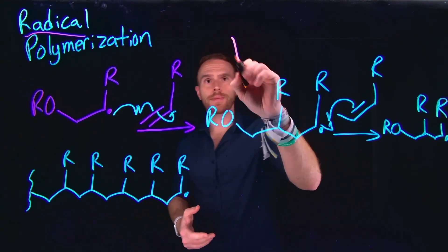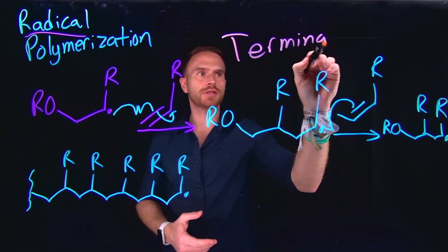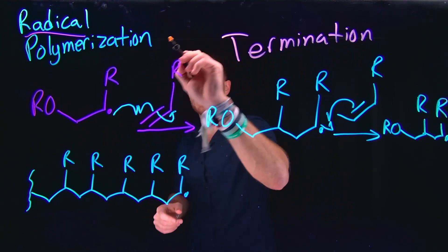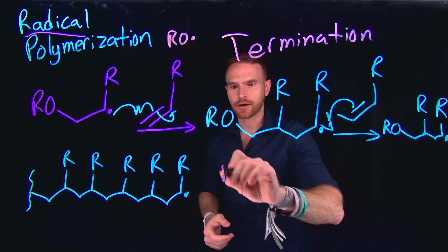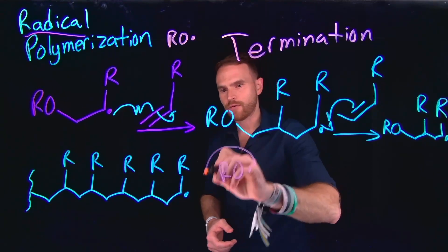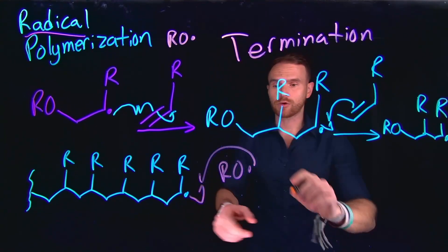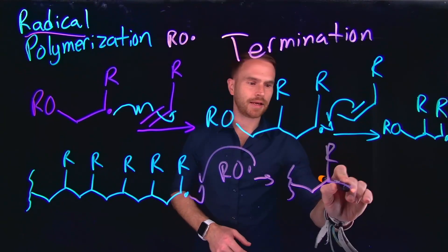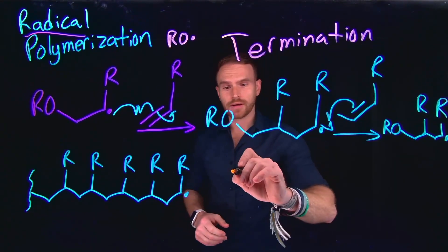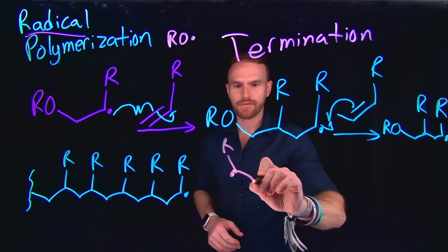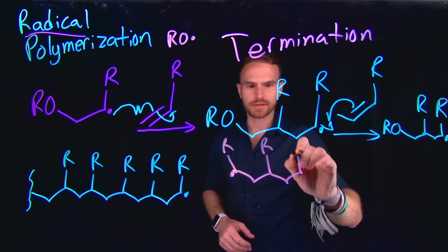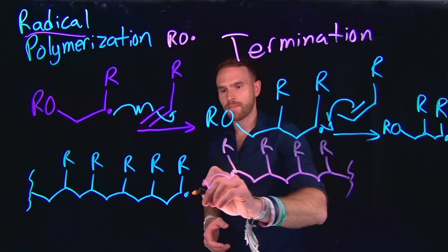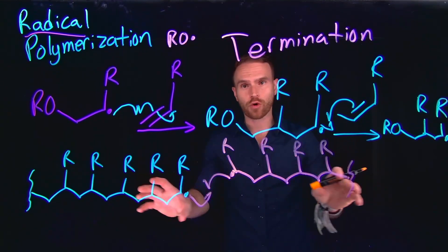Once propagation has occurred over several steps to produce our elongated polymer chain, the final step is called termination. Termination can actually proceed via two different pathways. Remember, we generated two radical species from our peroxide. So one termination pathway is that the other radical we formed can conjoin with the carbon radical to finally form our final polymer, which would contain an OR ending group. Alternatively, if two different polymer chains come into contact with one another, we could get a termination step where two carbon radicals combine to form an even longer, fully formed polymer chain.